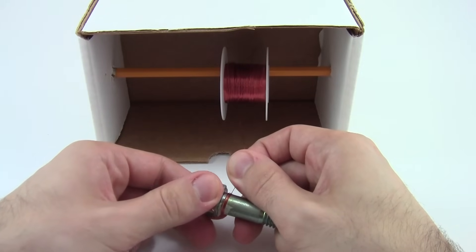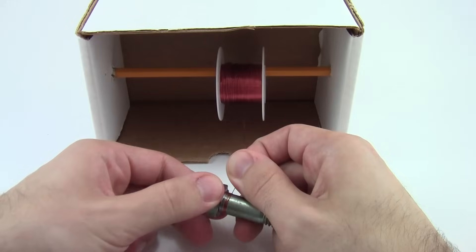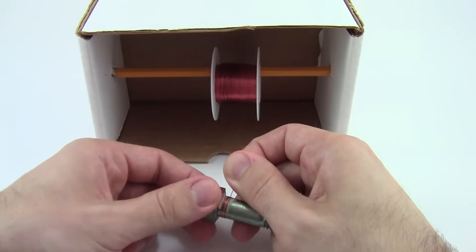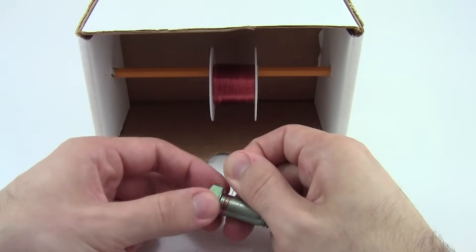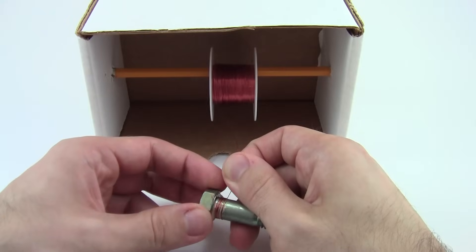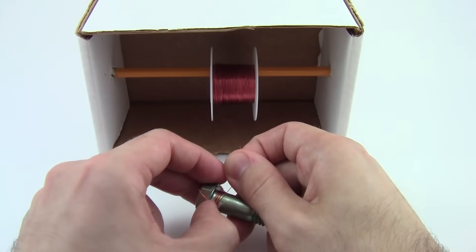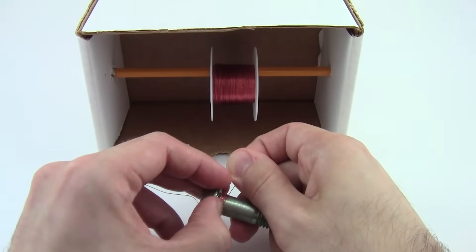To wind the coil, pull the wire taut with your fingers and rotate the bolt slowly to prevent the wire from getting tangled. Count one full revolution each time the piece of tape passes, and occasionally use your fingernail to slide the individual turns against each other, keeping the coil tight.